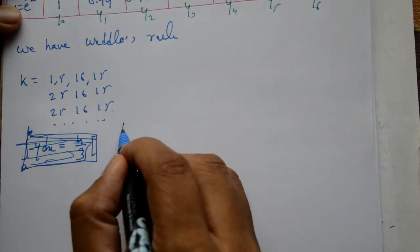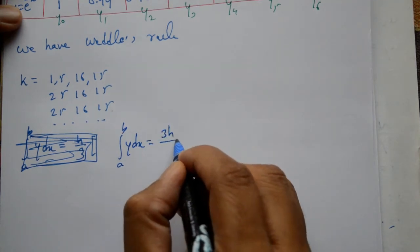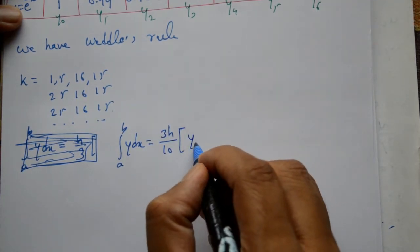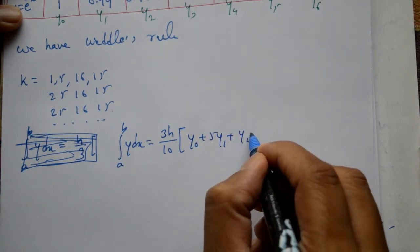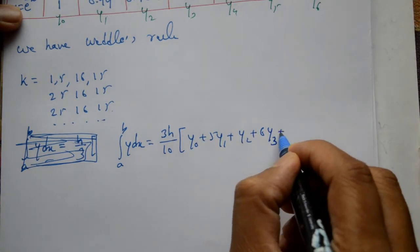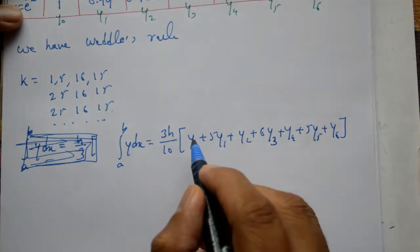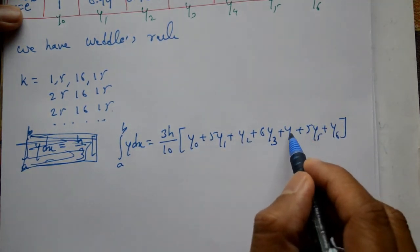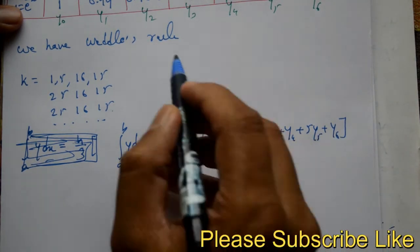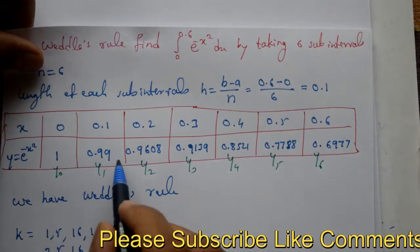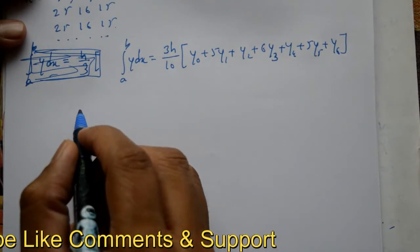The formula is: integration a to b, y dx equals 3h by 10, then y naught plus 5y1 plus y2 plus 6y3 plus y4 plus 5y5 plus y6. The coefficients are 1, 5, 1, 6, 1, 5. Instead of 2, take 1. We have the values here, both y values and h value. Now substitute.